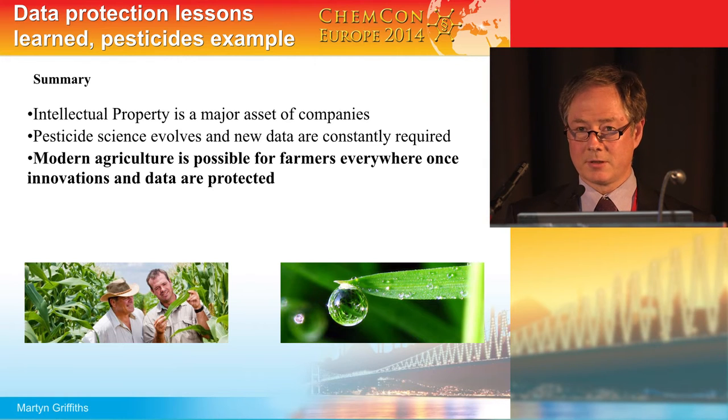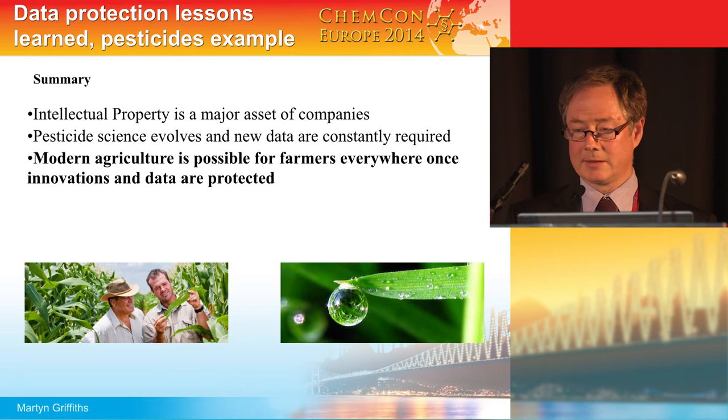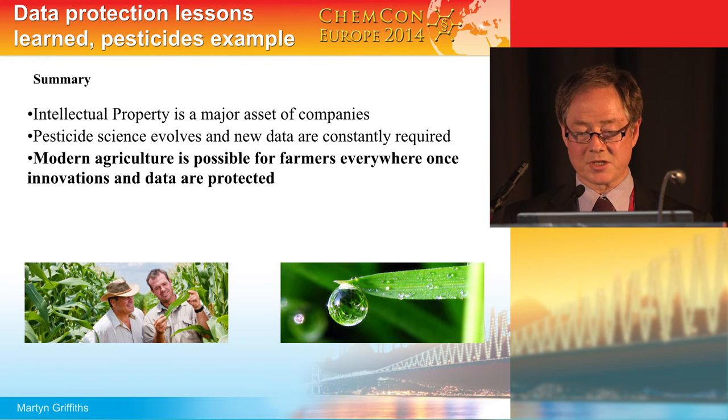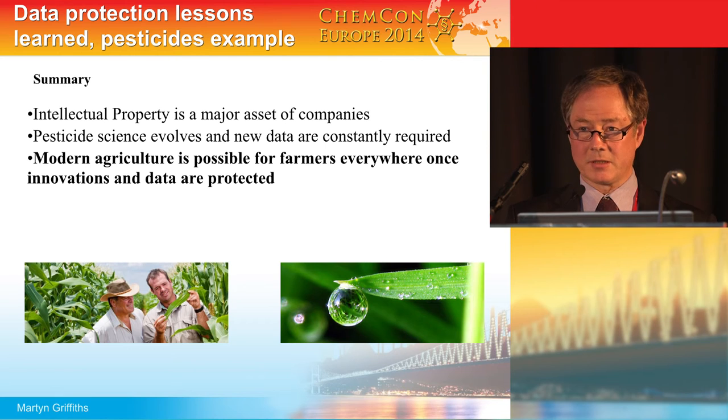In summary, intellectual property is a major asset for companies — whether in biocides, REACH, or pesticides. Pesticide science evolves regularly and we have many new guidance documents for scientific risk assessment, particularly in Europe, so we need to generate and submit new data. Modern agriculture can grow and be sustainable for farmers worldwide, as long as innovations and data are protected. As I hope I've shown with these examples: if there is no data protection, there is no innovation, and agriculture becomes less sustainable.